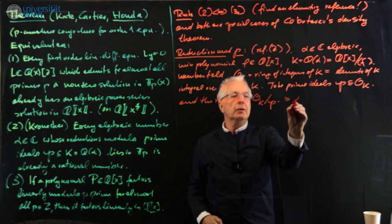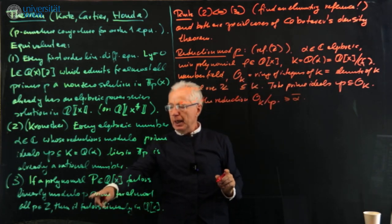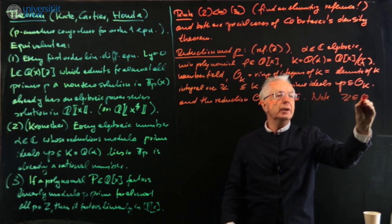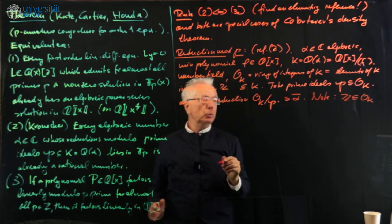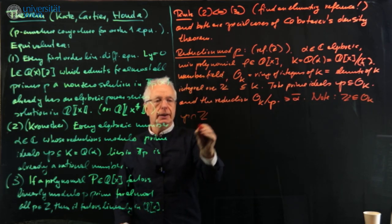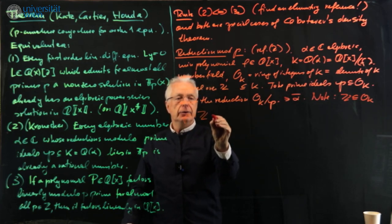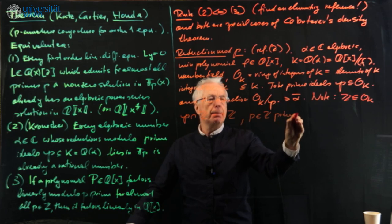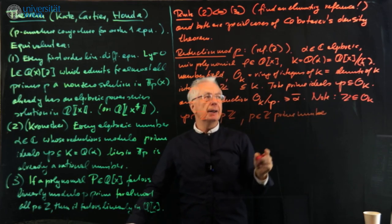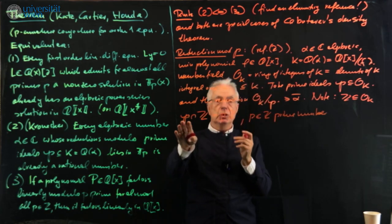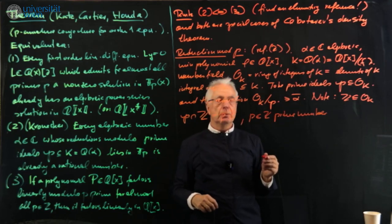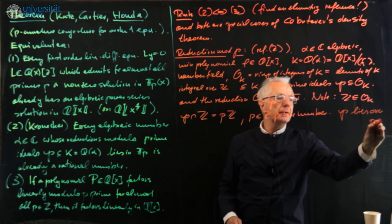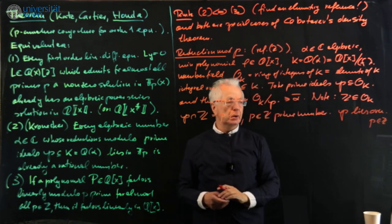I have to explain a little bit this reduction modulo P before I give you the proof. Any questions so far to the statement here? So we can continue. Reduction mod P concerns condition two. We have alpha in C algebraic, minimal polynomial F in Q[X]. We have K = Q(alpha), which is also Q[X] mod F. This is a number field.